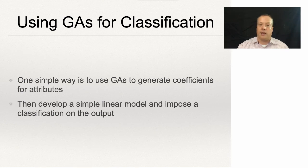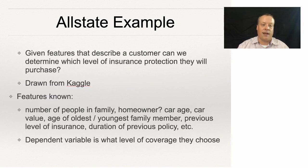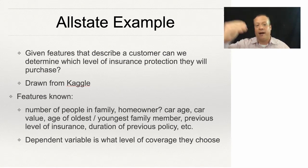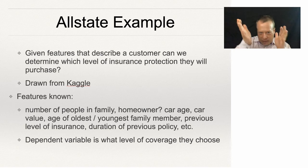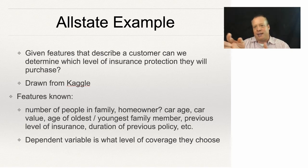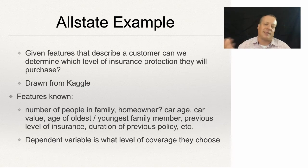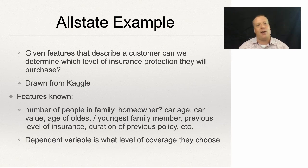You can even think about this in the Allstate example — we could imagine ordering the coverage levels from one to five, then take all the attributes and encode into the genome a weighting on those attributes. In the evaluation function, we would simply take that weighting, multiply times that attribute, and see what coverage level it predicts. That's not the best example because it doesn't allow for the fact that there's a bunch of non-linearity in that space.